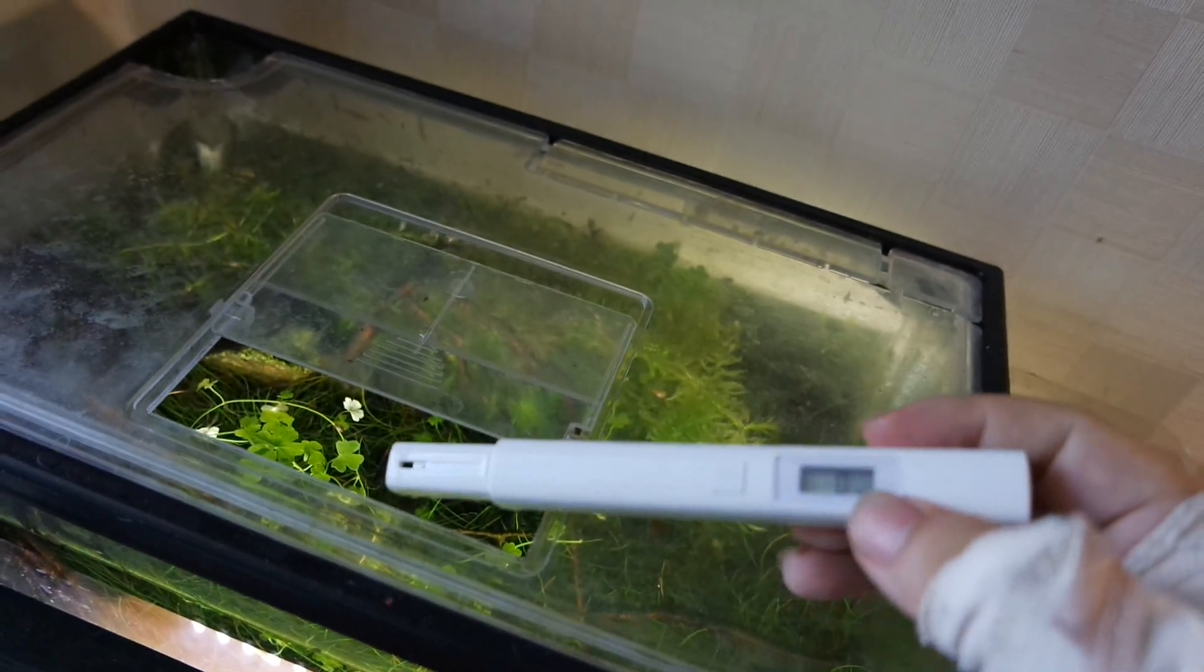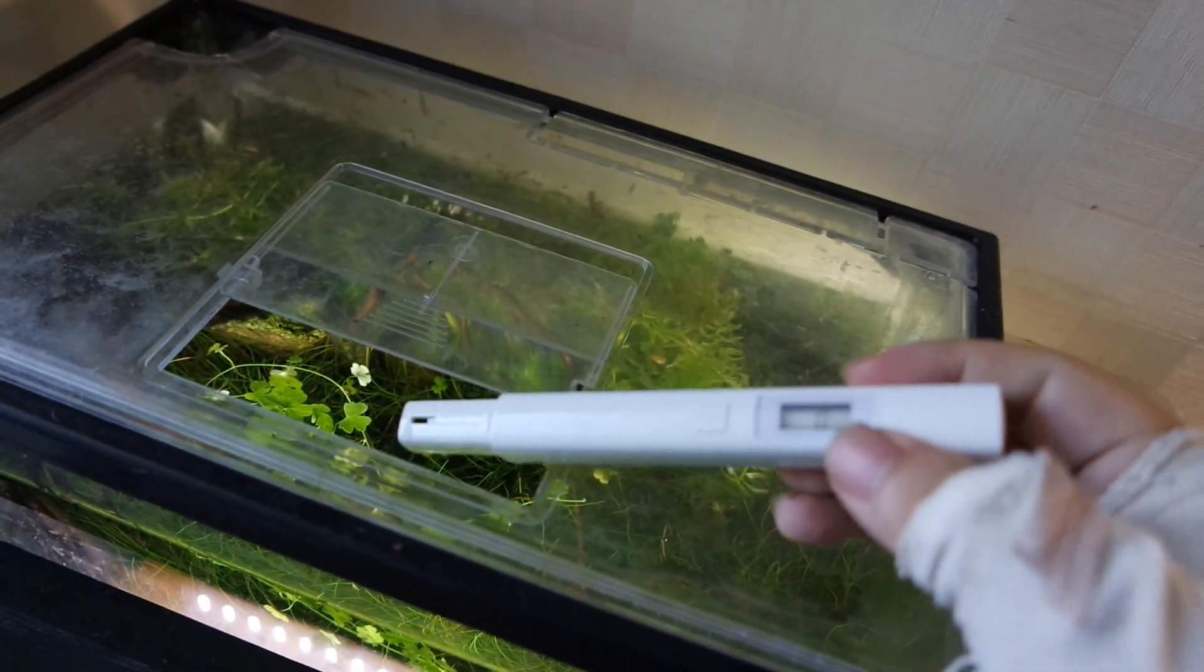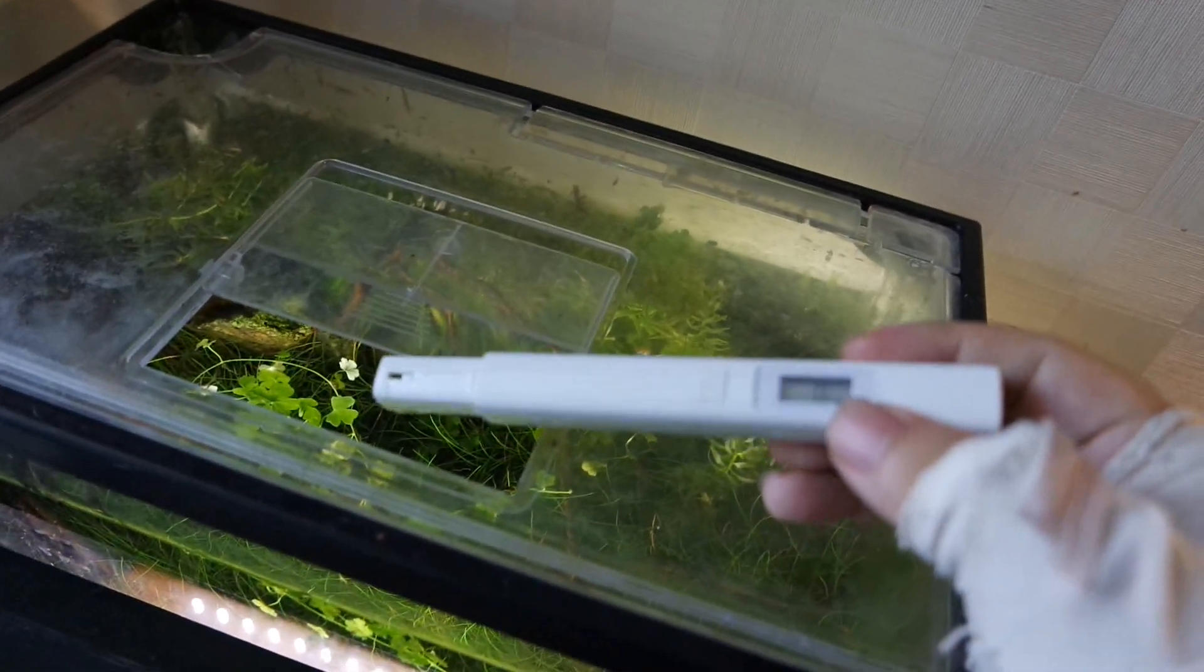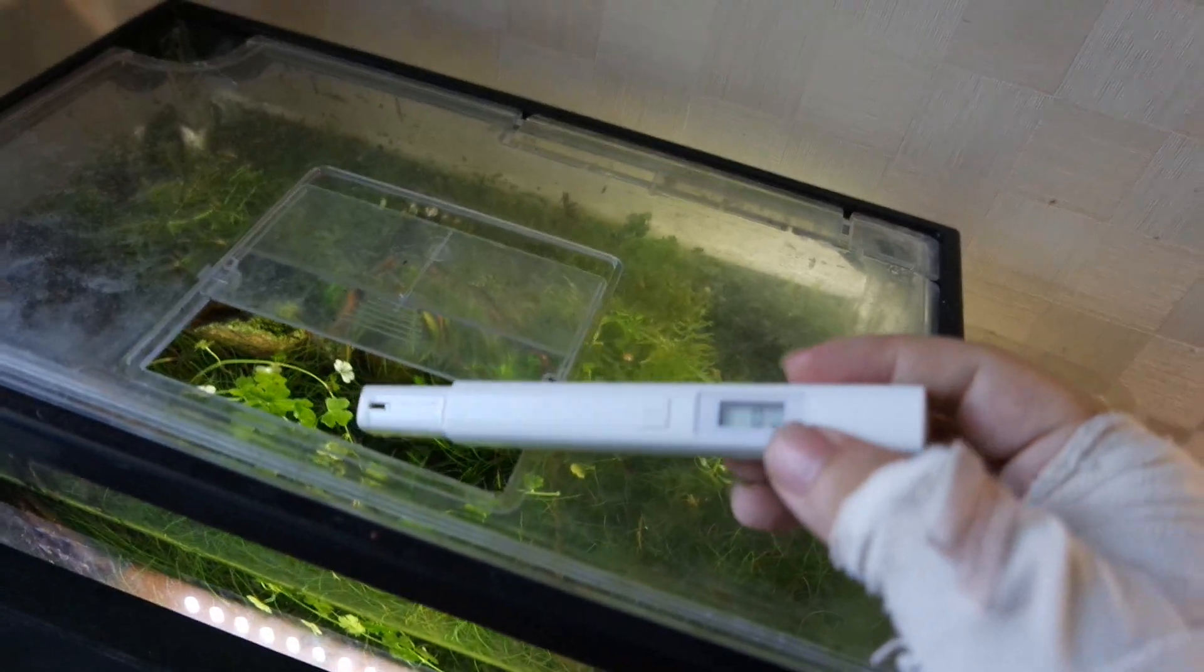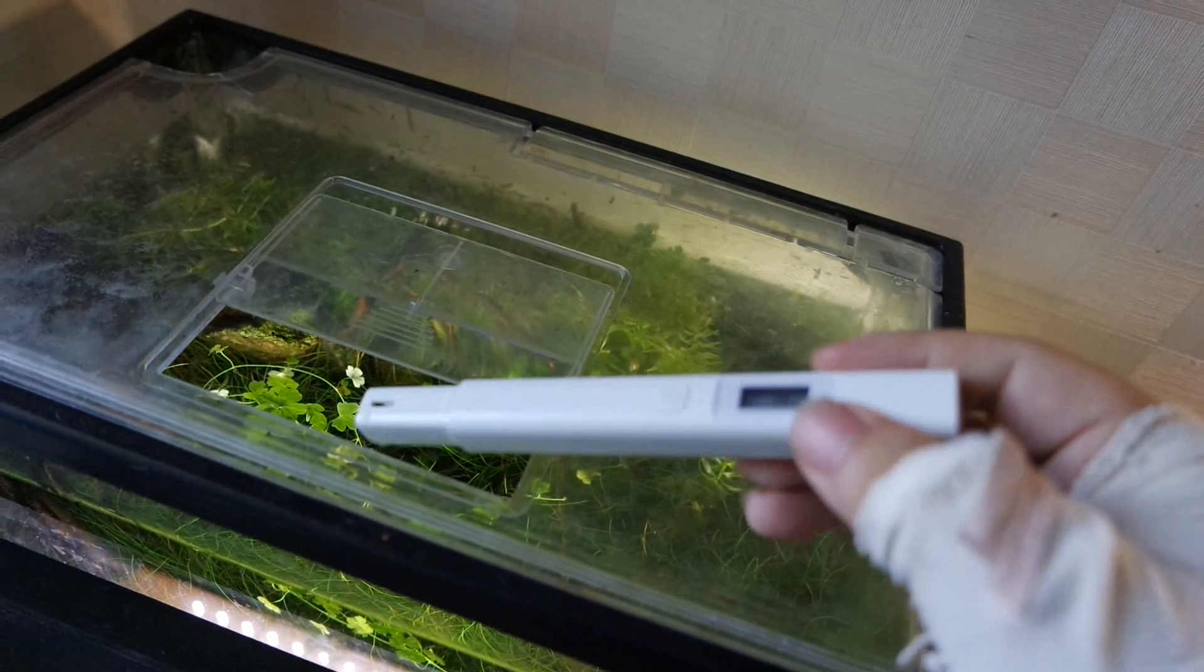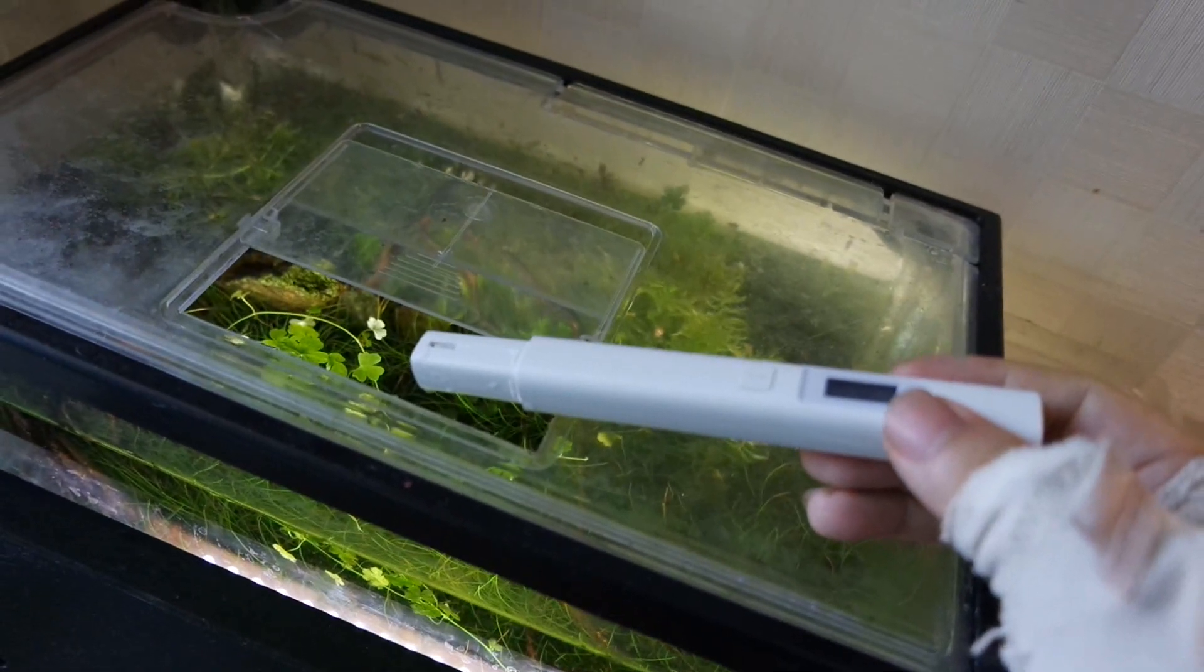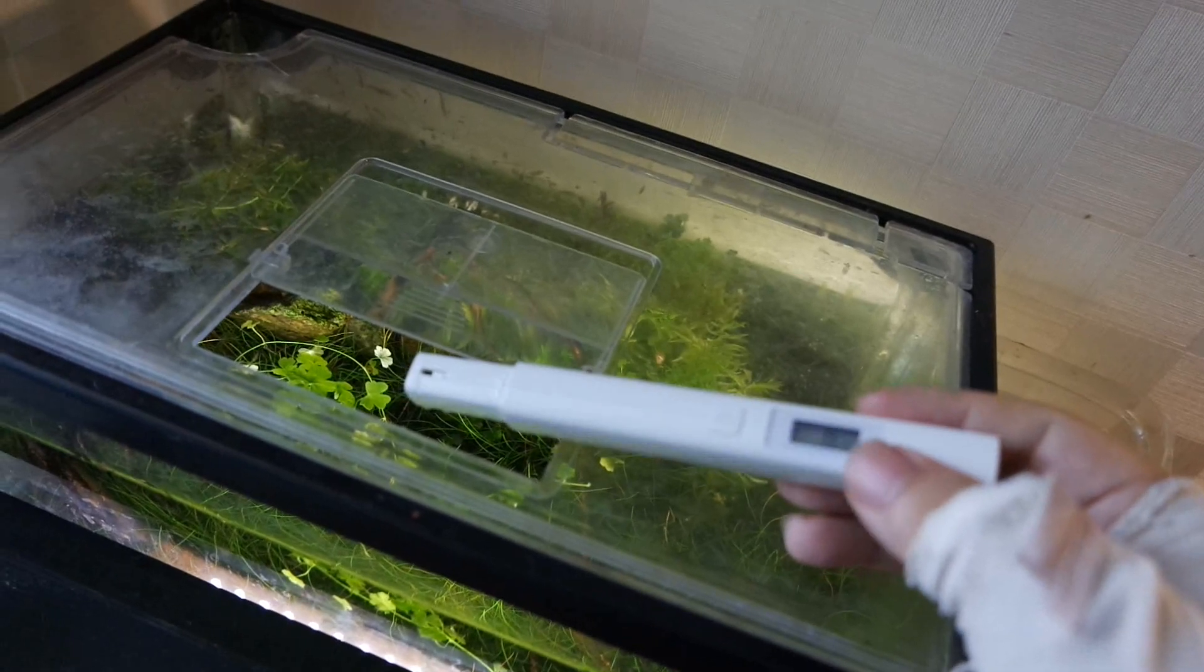So yeah TDS doesn't tell you how clean the water is. I just use it as a means to check if something is totally off. Like if one day I check my TDS and it is like 1000, I will look into the tank to see what is going on. Otherwise it is fine. And this is what I think TDS is good for. Because as you saw you can use a fairly cheap meter like this. This thing only costs like 10 to 20 bucks. And you get immediate reading. So it is good to do some quick routine checks to see if anything is going crazy. So yeah that is what I use it for.